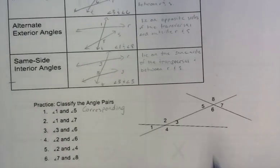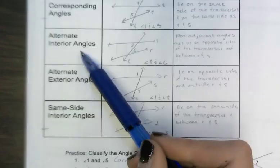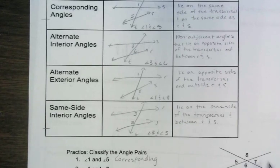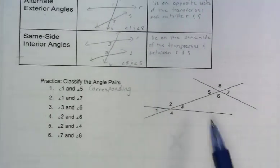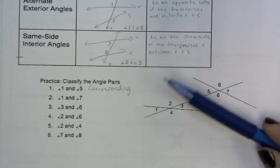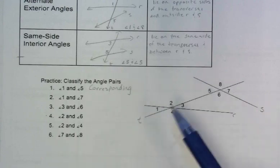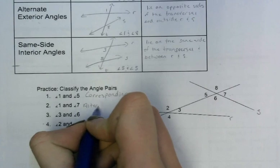Angles 1 and 7: looking at the transversal, they're on opposite sides, so it's going to be one of the alternate types. I just need to decide if they're in between my other two lines or outside. Angles 1 and 7 are outside, so they're alternate exterior. They're on opposite sides of T and outside of both R and S — so alternate exterior.